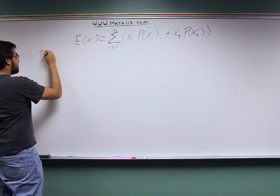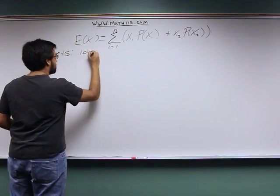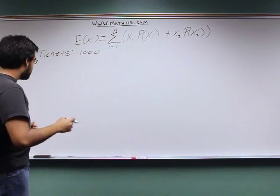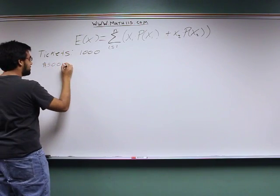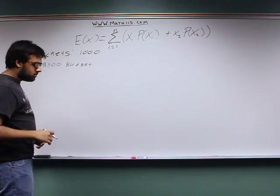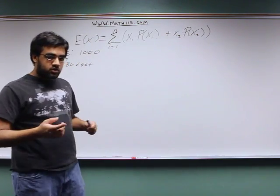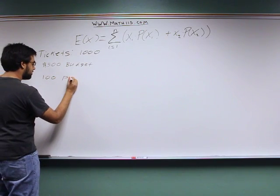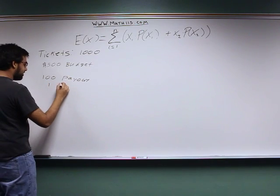First, you know that there are a thousand tickets. So that's a really big thing that you need to know. You also know that they have a limited budget. They say that they need to have $300 as the budget. And on top of that, they also say that they give you your payouts. They say that you have a $100 payout and a $1 payout.